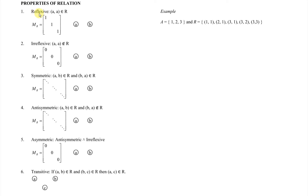First, reflexive. Reflexive means that each and every element must relate to itself. When we look at the matrix relation, all diagonal entries equal to 1. And for the digraph, we are able to find a loop for all the vertices.